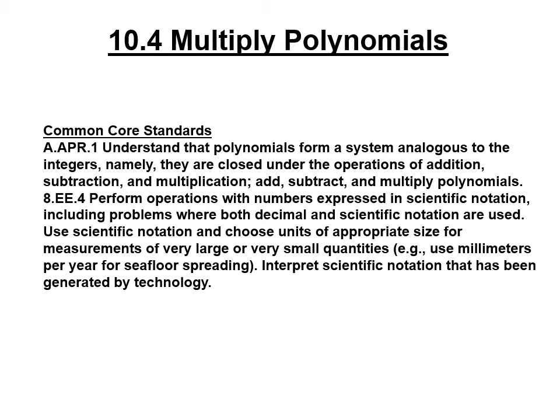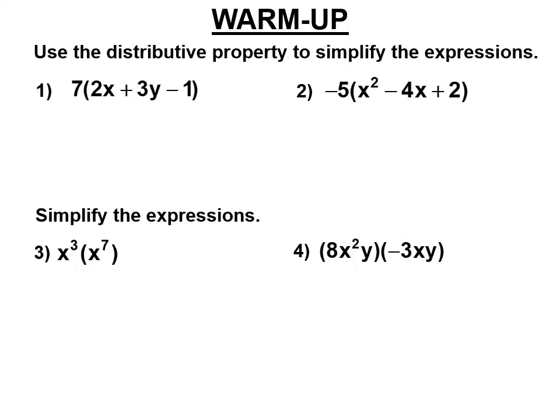Welcome to lesson 10.4. We're going to be multiplying polynomials in this lesson. We have to remember the distributive property. We distribute that 7 and we get 14x plus 21y minus 7. Here we have to distribute a negative 5, so we get negative 5x squared plus 20x minus 10.